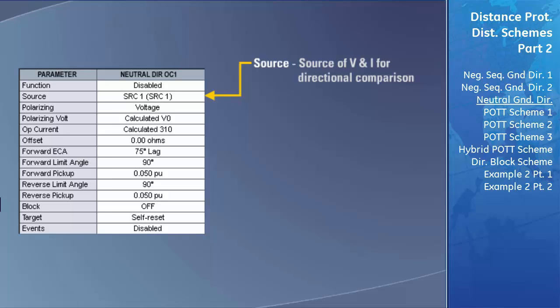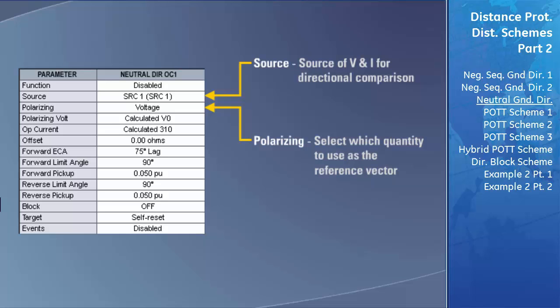In the neutral directional element, you have the ability to select either the zero sequence voltage or the measured ground current as the reference angle for directional comparisons. You are given this ability so that the neutral directional overcurrent element can still be used when the voltage transformers are delta connected. In the field labeled Polarizing, you need to select which quantity to use as the reference vector. You can select voltage, current, or both.